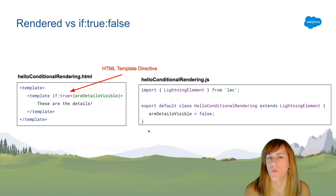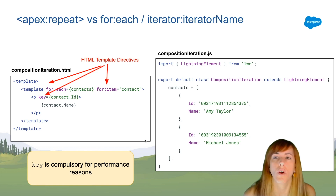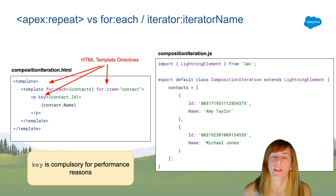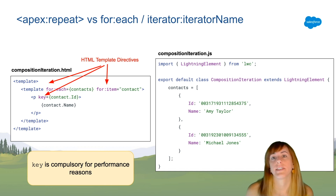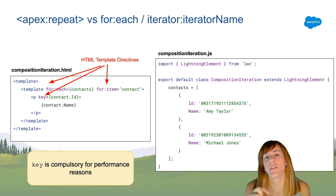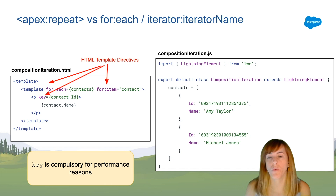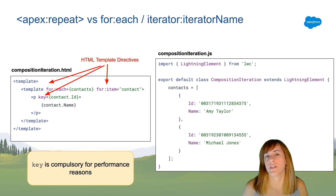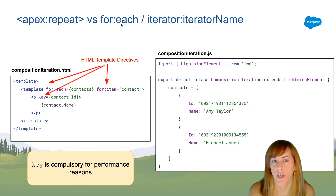You can use if:true and also if:false. For iterations in Visualforce, you normally use the apex:repeat tag. In Lightning Web Components, there are two template directives for iteration: ForEach and Iterator. The difference is that Iterator gives you a property to check if a specific element is the first or last in a list, which is helpful when you want to apply different behavior to those elements. I've used the ForEach template here to keep it simple.